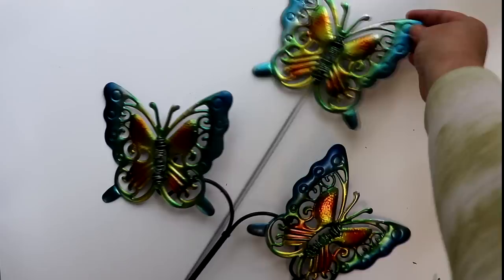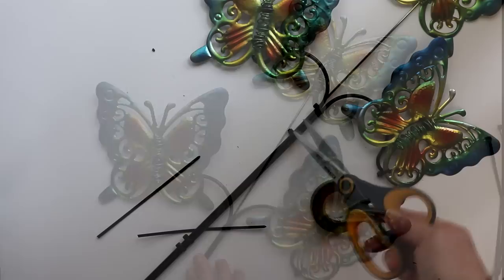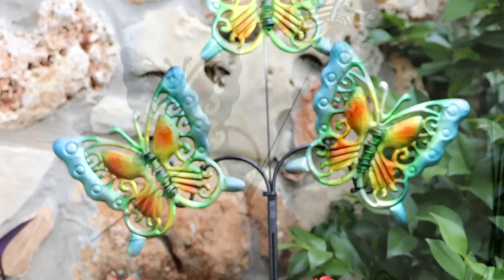Once both of the side butterflies were in place I took the third butterfly and placed that in the middle then zip tied the stake to the pole of the hanger. I also added some electrical tape to reinforce. And that's it, a quick and easy way to make a more substantial decor piece simply by adding multiples into one piece.